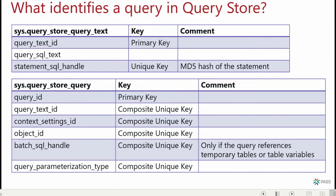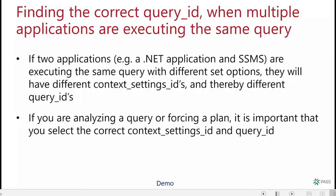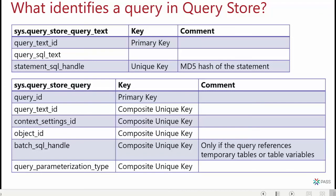In the query table, query_id is the primary key, with a unique combination of columns. If any of those change — for example, context_settings_id — you get a new query ID. That's why we saw two different query IDs when the SET options were different. Similarly for plans, the query_plan_hash is the unique key.